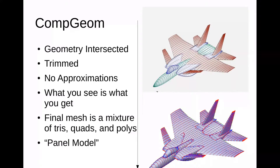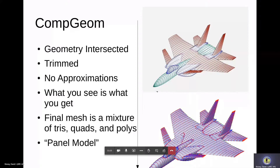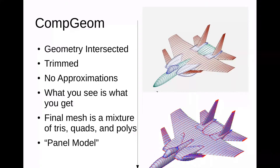CompGeom is the second supported geometry path generated in OpenVSP. It's intersected and trimmed, so all those overlapping components — wings, bodies, tails, canopies — are all intersected and trimmed. Any parts of those bodies and wings and tails that are inside are thrown away, and you end up with just the wetted surface of the vehicle. The final mesh is a mixture of tris, quads, and polygons, and we'll refer to this as a panel model. There are really no approximations going on in terms of the geometry — what you started with in OpenVSP is what you'll end up with, including thickness.